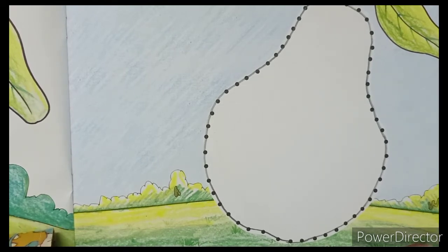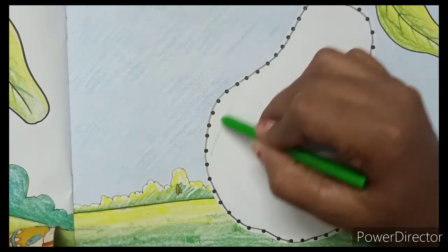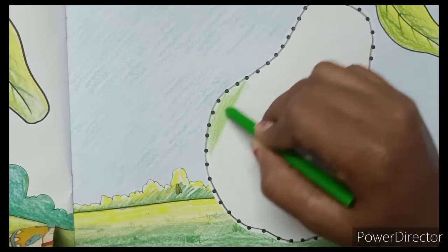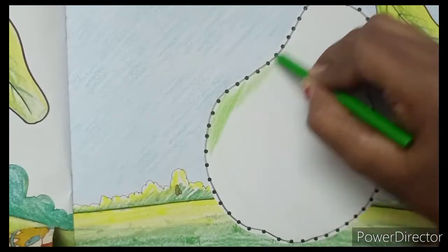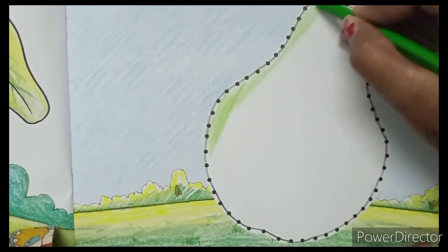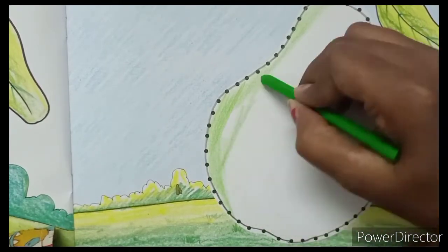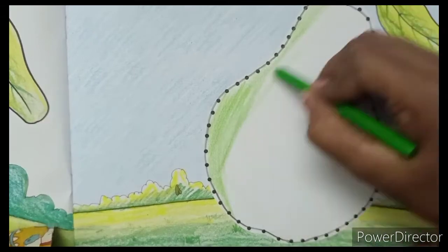You have to start coloring once you finish joining the dots with your pencil. Start coloring the pear and complete the picture.